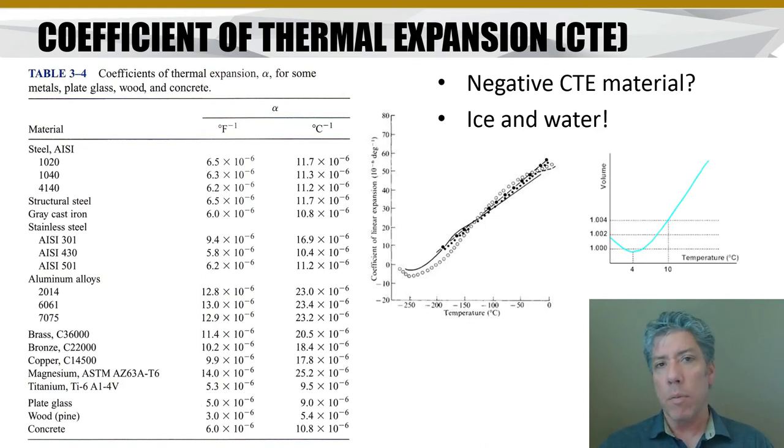Ice and water in some regions of temperature do have negative coefficients of thermal expansion. Water, in particular, when it is not frozen, has a negative coefficient of thermal expansion from zero degrees up to four degrees. And then once it's ice in the solid phase, below about 250 degrees Celsius, it also has a negative coefficient of thermal expansion.